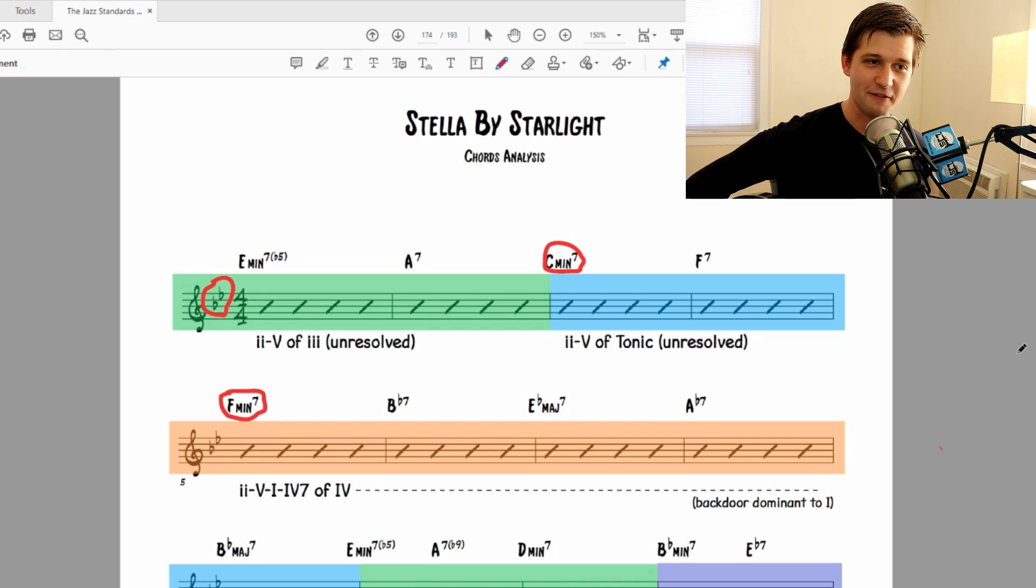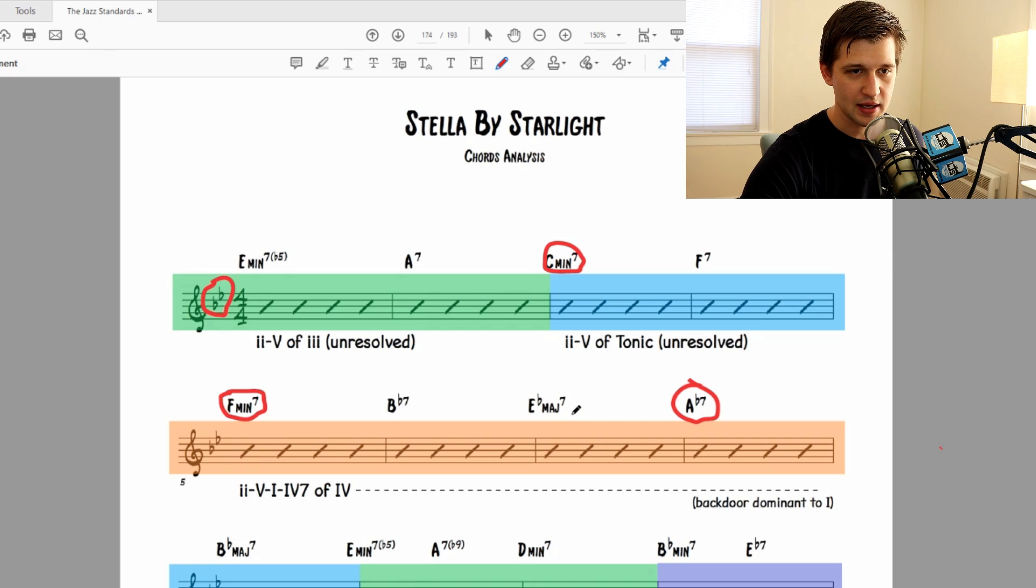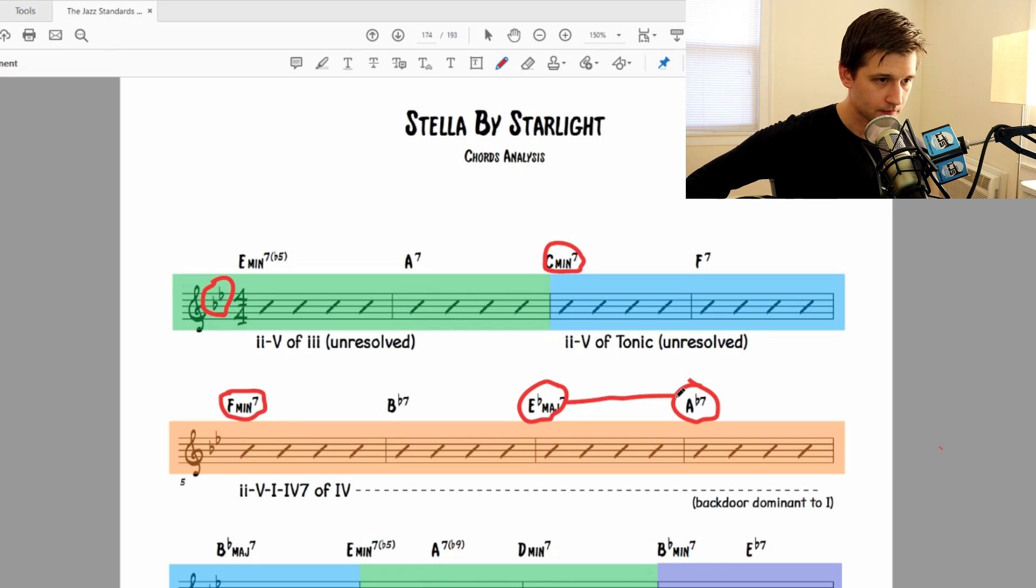We're not landing on a B flat major at all. So we have to figure out what that is. So now we have F minor 7, B flat 7, E flat major 7, A flat 7. So what we have here is a 2-5-1 of 4. But we also have this A flat 7 right here, which is an important one. Now the relationship between E flat major 7 and A flat 7, that's like the 4 dominant 7 of E flat major 7. It's a 4 dominant 7 of E flat major 7. But really the A flat 7 also has its own function.